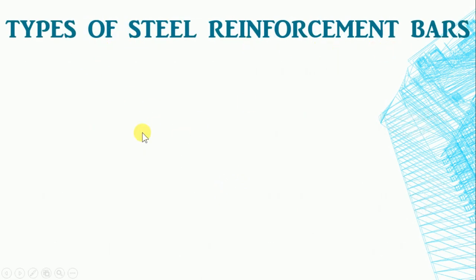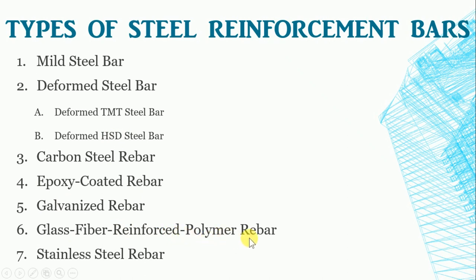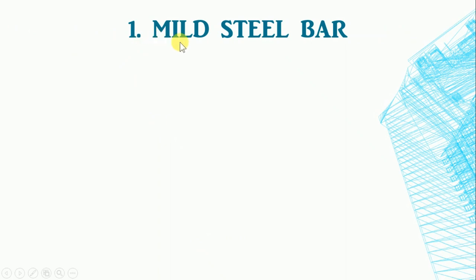What are the different types of reinforcement bars? Mild Steel Bar, Deformed TMT steel bar, Deformed HST steel bar, Carbon Steel Rebar, Epoxy Coated Rebar, Galvanized Rebar, and Glass Fiber Reinforced Polymer Rebar. Let's understand these one by one.